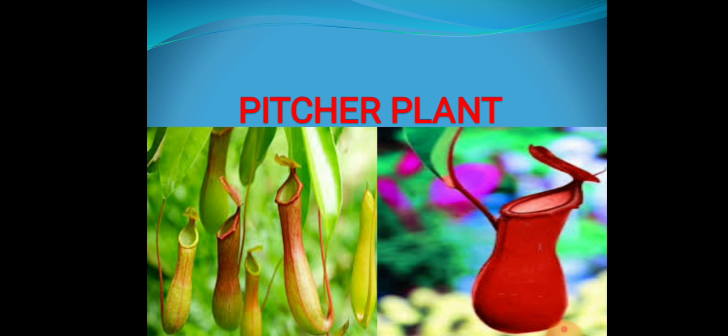Students, do you know there are some plants which trap and eat frogs, insects and even mice? It is very astonishing. But there are such plants which are called insectivorous plants. The pitcher plant is one such plant. It is also called Nepenthes. It is found in Australia, Indonesia, and Meghalaya in India.